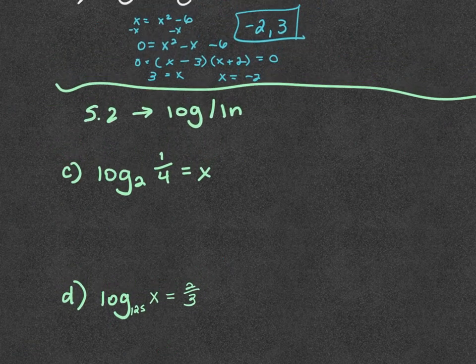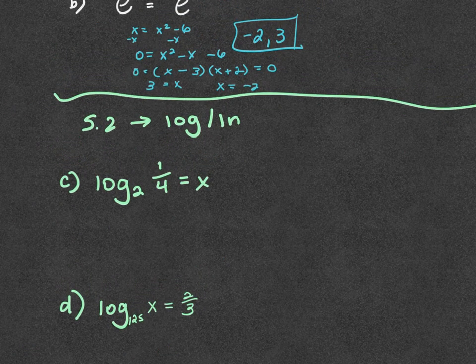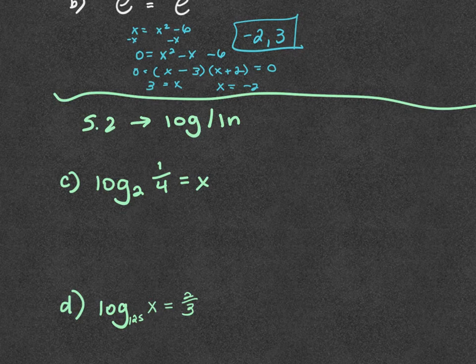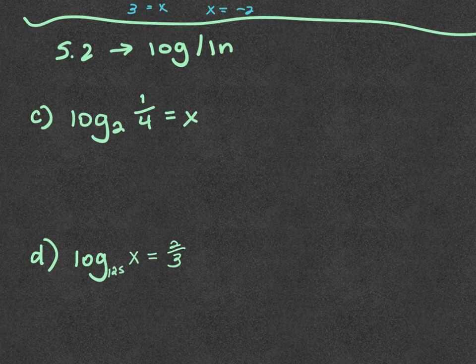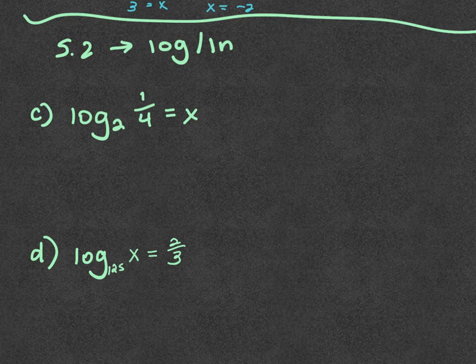There are lots more practice on logs on the quiz review. For logs we want to get it into exponential form and figure it out from there, unless you can do it in mental math. For log base 2 of x equals negative 2: the 2 comes over and picks up the x, so 2 to the x equals one-fourth. What do I have to raise 2 to in order to get one-fourth? Negative 2.